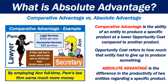What's the difference between comparative advantage and absolute advantage? Comparative advantage is the ability of an entity to produce a specific product at a lower opportunity cost compared to another product. Opportunity cost refers to how much that entity had to give up to produce something. Absolute advantage, on the other hand, is the difference in the productivity of two entities regarding a specific product.